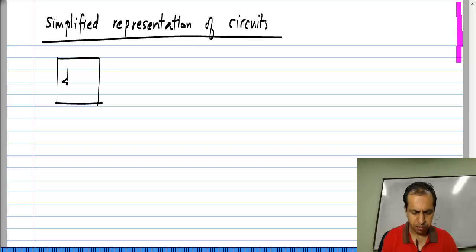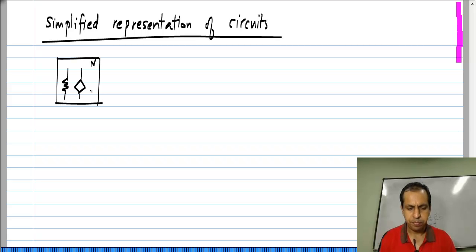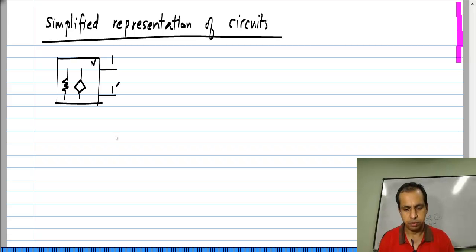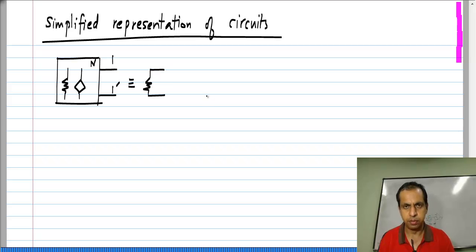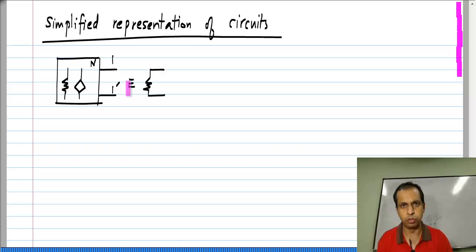If you have a network containing resistors and linear control sources, and a pair of terminals is brought out, then at that pair of terminals it is equivalent to a single resistance. The resistance could be positive or negative. If this network consists only of physical resistors, then this resistance will also be positive; otherwise, if it also contains control sources, it could be negative.